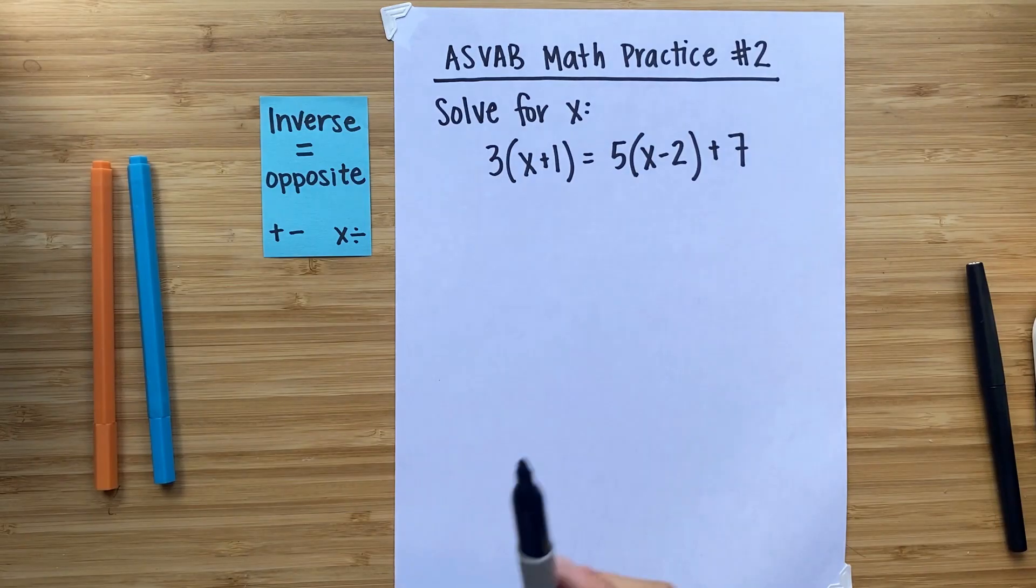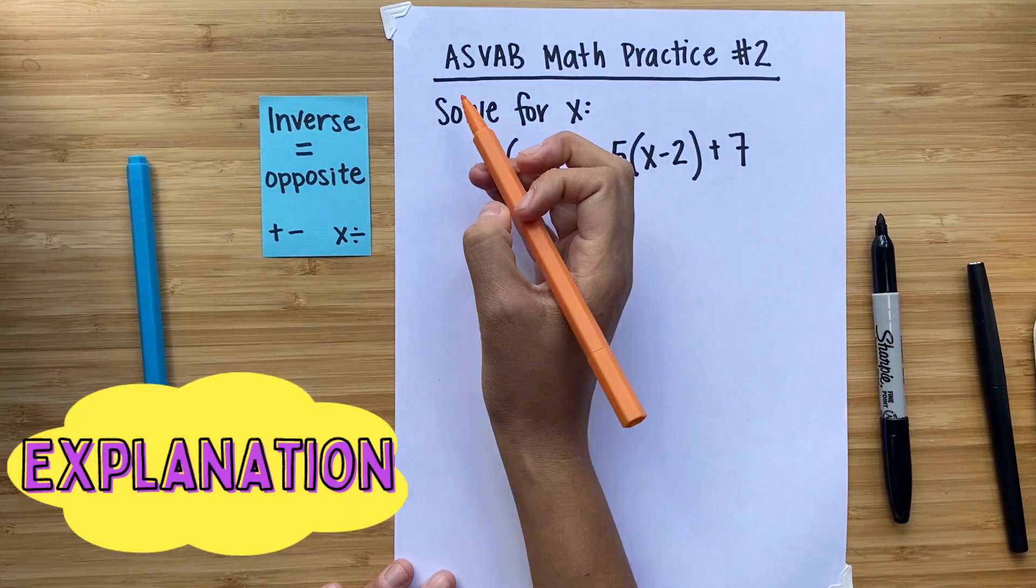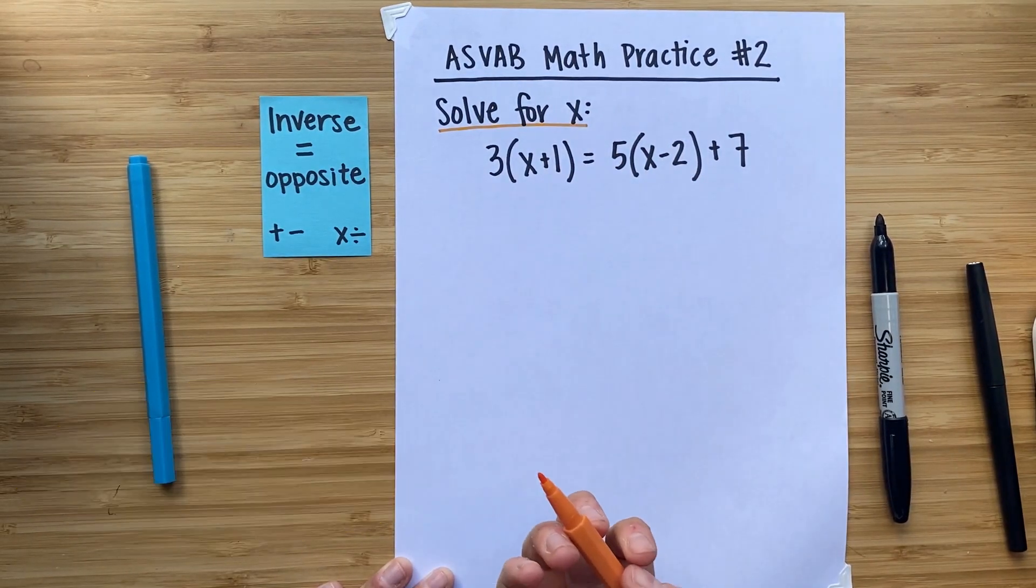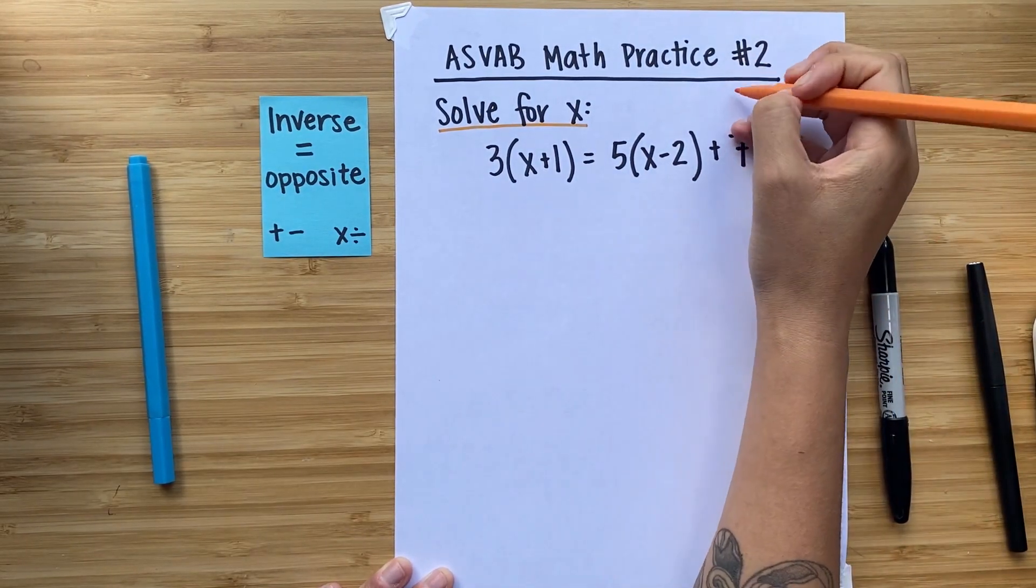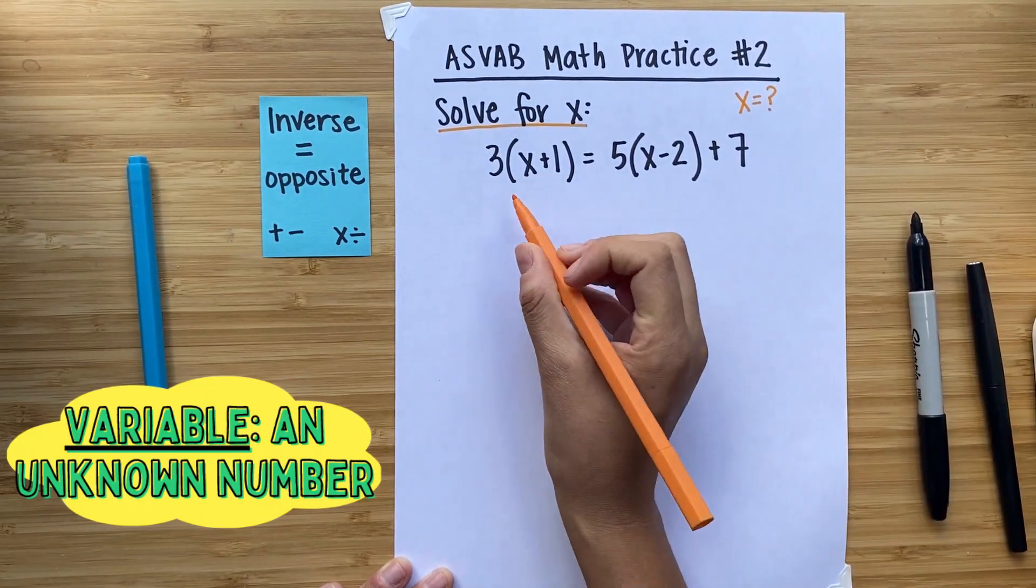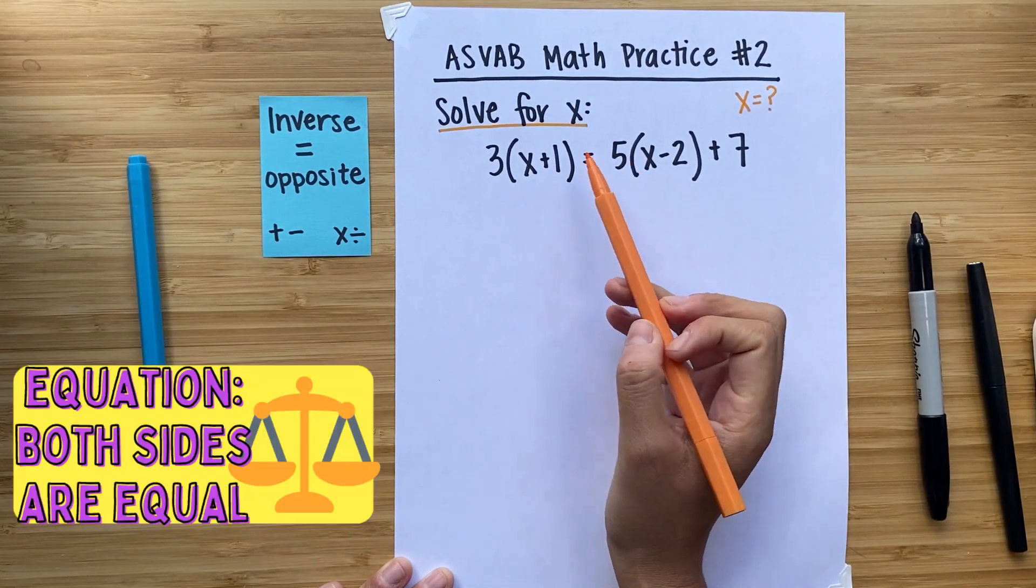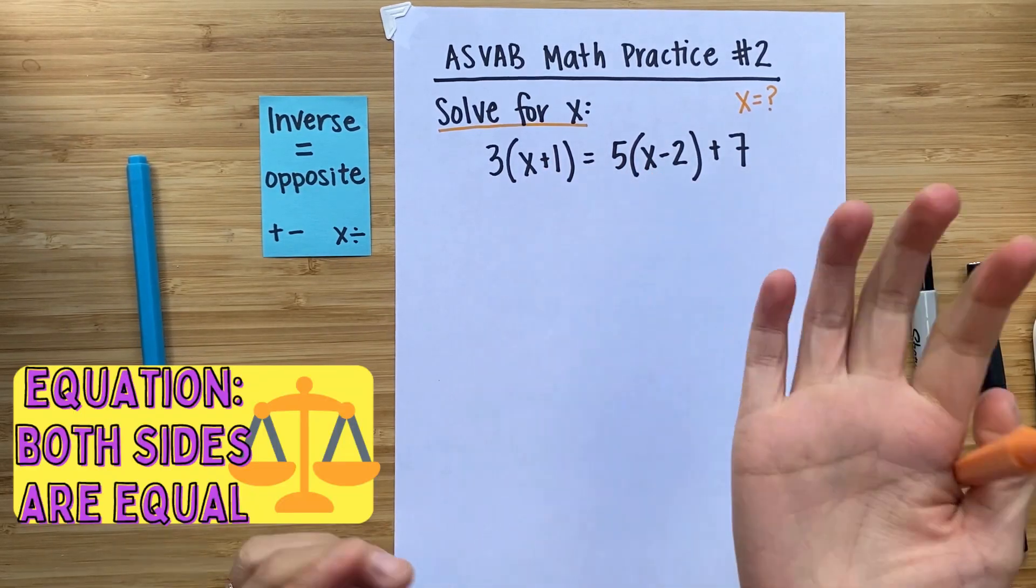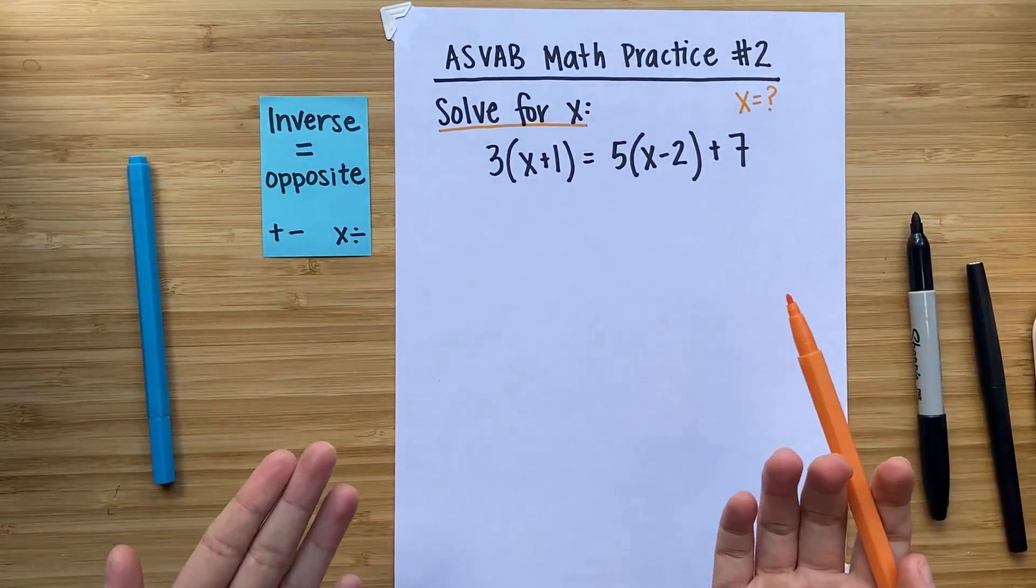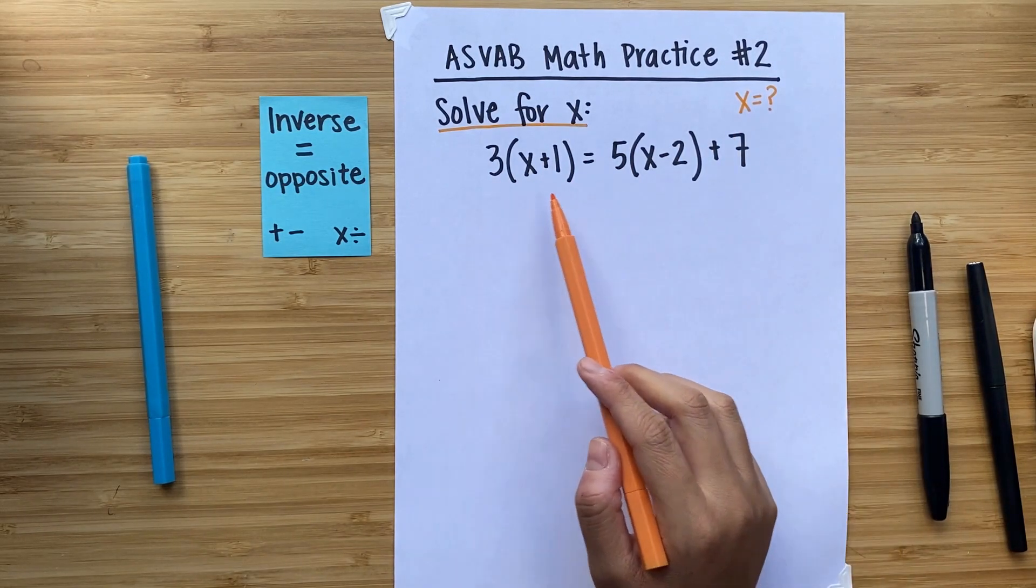The first thing that we want to do with this problem is figure out what is it asking us to do. This problem is asking us to solve for x. So what does that actually mean? It means that we want to figure out what value or what number for x will make this equation true. An equation is true if it's equal on both sides. That's what makes it an equation. Both sides are equal. They're of the same value. So we're trying to figure out what number equals x and will make this whole equation true.